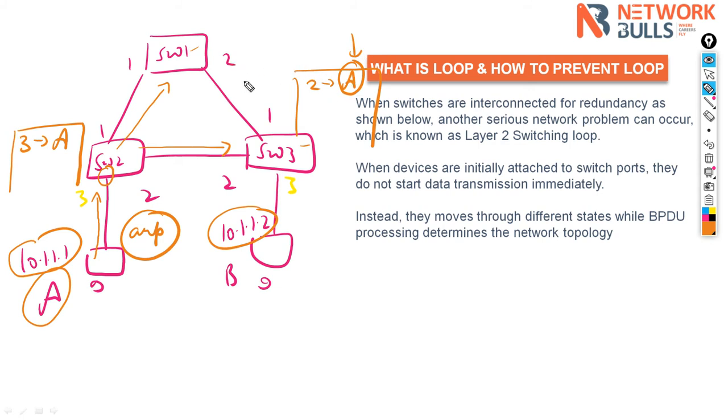You can't skip this thing that switch one will also send the same ARP packet to switch three because this is the behavior of a device. On the port it has received the broadcast, except that port, it should send the broadcast on all the ports in the same broadcast domain.